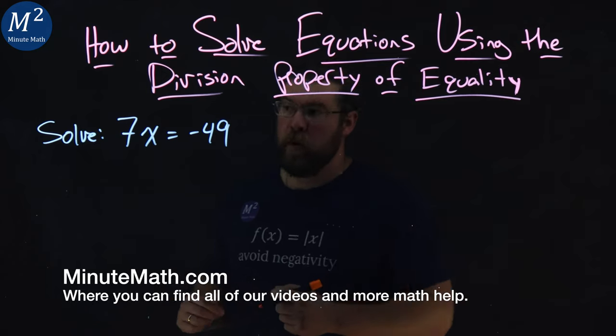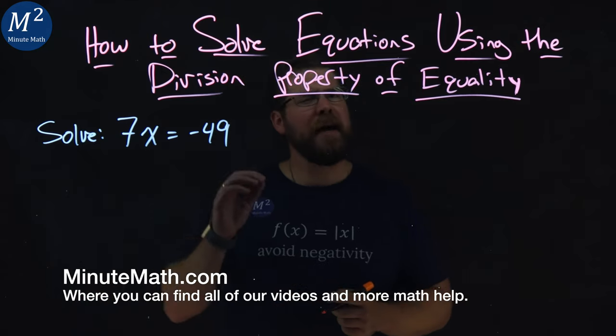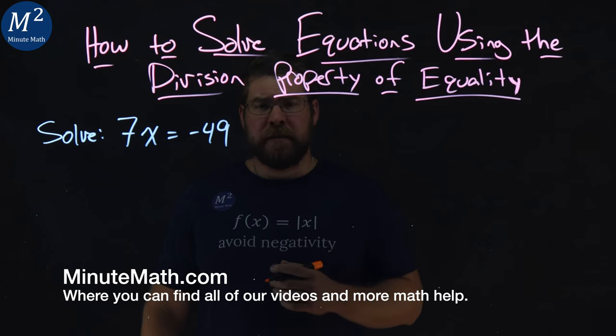We're given this problem here: 7x equals negative 49, and we want to solve this.